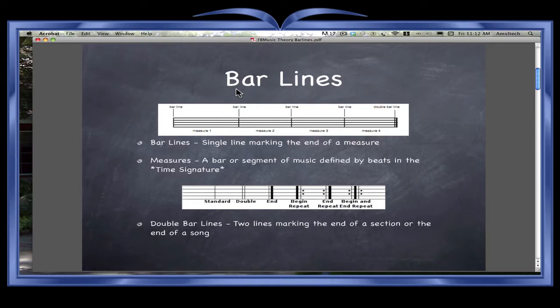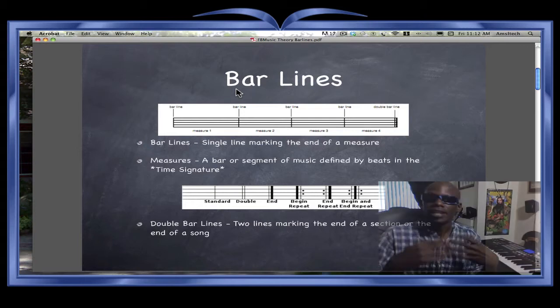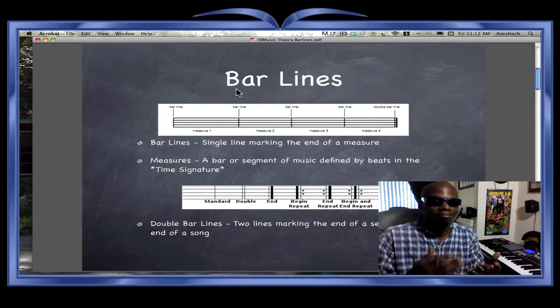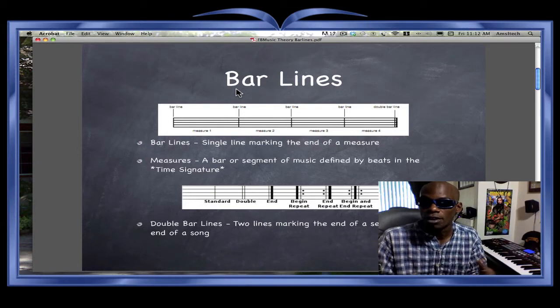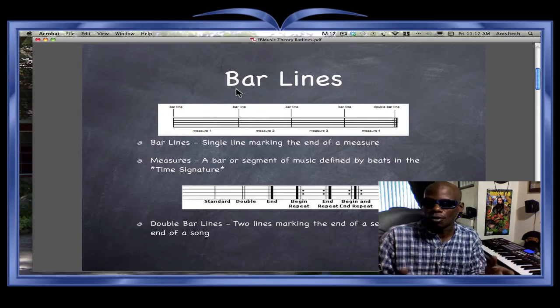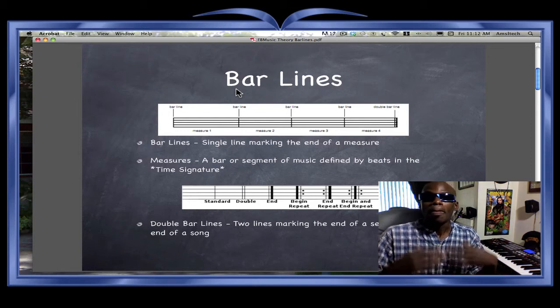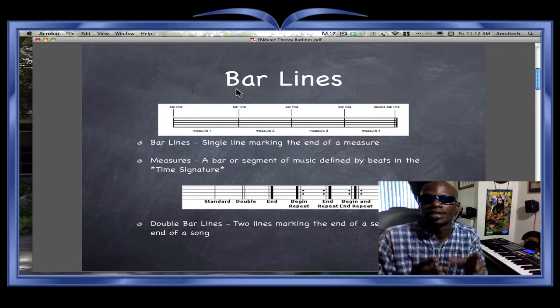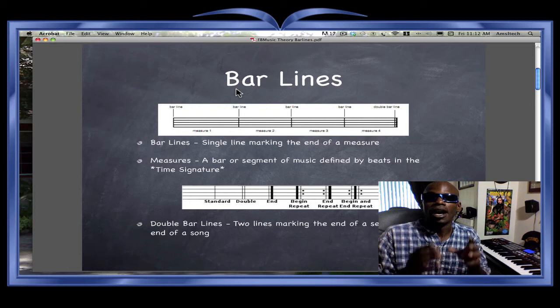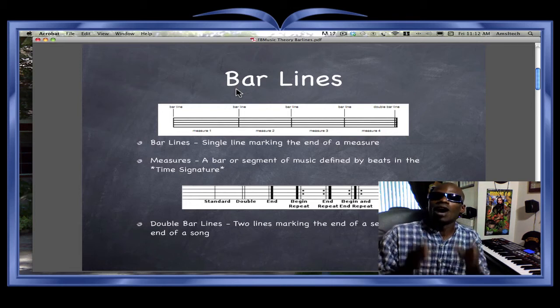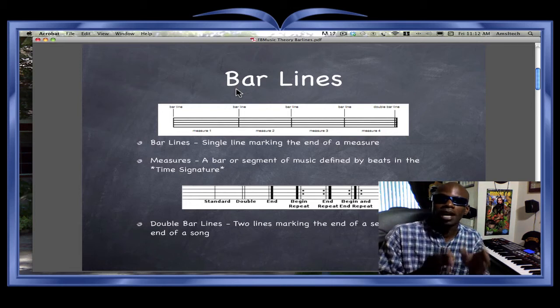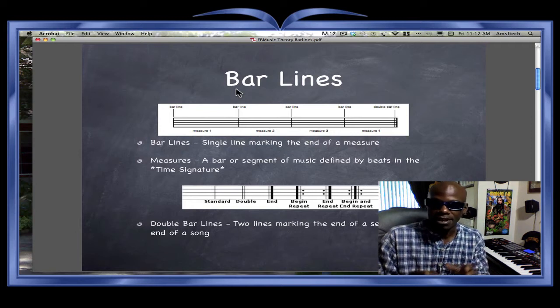What a measure means, per Webster's Dictionary, is: a bar or segment of music defined by beats in the time signature. I'll explain time signature — if you've seen a time signature, it looks like 4/4 if you've seen that in a staff before. That area is referred to as the time signature. I'll go on about time signatures in another lesson.